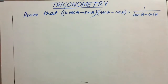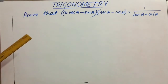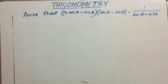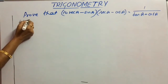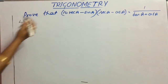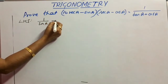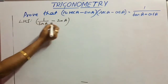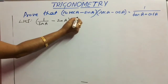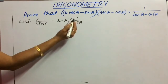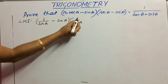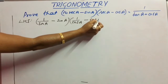Move on to the next question. Prove that (cosec A - sin A)(sec A - cos A) = 1/(tan A + cot A). To simplify, we work on both LHS and RHS. Consider LHS: cosec A - sin A. Since cosec is the reciprocal of sin, write this as 1/sinA - sinA, multiplied by (secA - cosA), where secant is the reciprocal of cos.